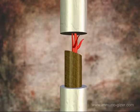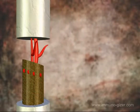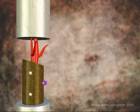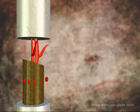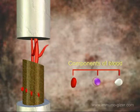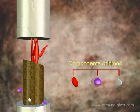This cut-away of a bone segment reveals the bone marrow, in which blood is manufactured. Shown are red blood cells, which carry oxygen to the body; white blood cells, which fight infections; and platelets, which function to clot blood in the event of injury.